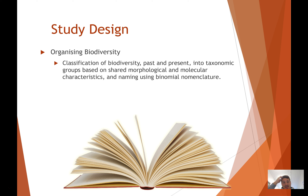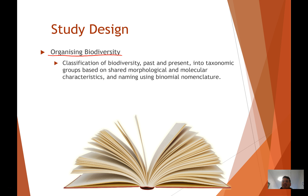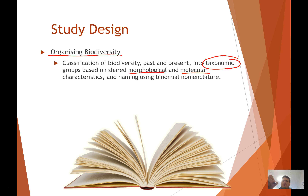So in the study design, we're into the second last area of Unit 1 Bio, and it's all about organising biodiversity. We want to look at classifying biodiversity both how it used to happen in the past and how we do it more currently — and how we classify it into what we call taxonomic groups, based on morphological and molecular characteristics. These two things are quite important.